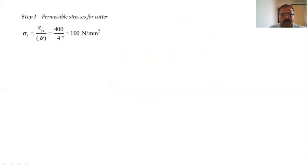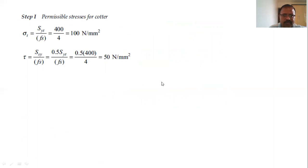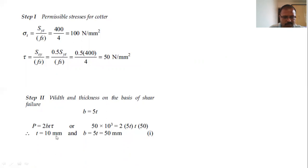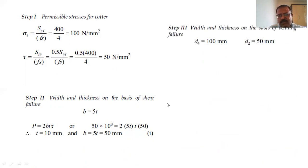Calculate permissible stresses: σt = Syt / FOS = 100 N/mm² and τ = 0.5·Syt / FOS = 50 N/mm². For the first criterion — shear failure: with b = 5t and using τ = P / (2bt), we get t = 10 mm and b = 50 mm. These are the cotter thickness and width based on shear failure.